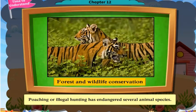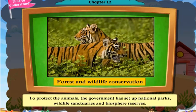Poaching or illegal hunting has endangered several animal species. To protect the animals, the government has set up national parks, wildlife sanctuaries, and biosphere reserves.